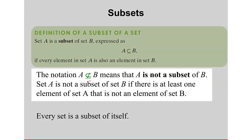This notation here means that A is not a subset of B. If you have this slanted line through the subset symbol, that means A is not a subset of B.